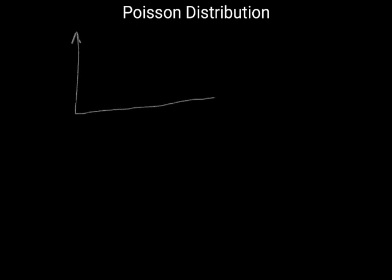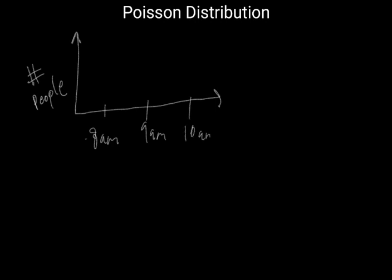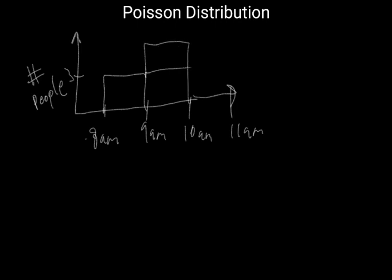A good example of this is if we were to model the number of people on the y-axis, with time intervals on the x-axis. So let's say we have 8 a.m., 9 a.m., 10 a.m., and 11 a.m. From 8 a.m. to 9 a.m. we saw that 3 people entered the store, from 9 a.m. to 10 a.m. we saw 5 people, and from 10 a.m. to 11 a.m. we saw 4 people.